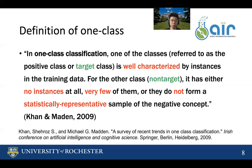Our idea is from one-class classification. By definition, one-class classification is a special case of binary classification where one class is referred to as the target class, well characterized by instances in the training data. But for the other class, also called the non-target class, it has either no instances at all, very few of them, or they do not form statistically representative samples of the negative concept.